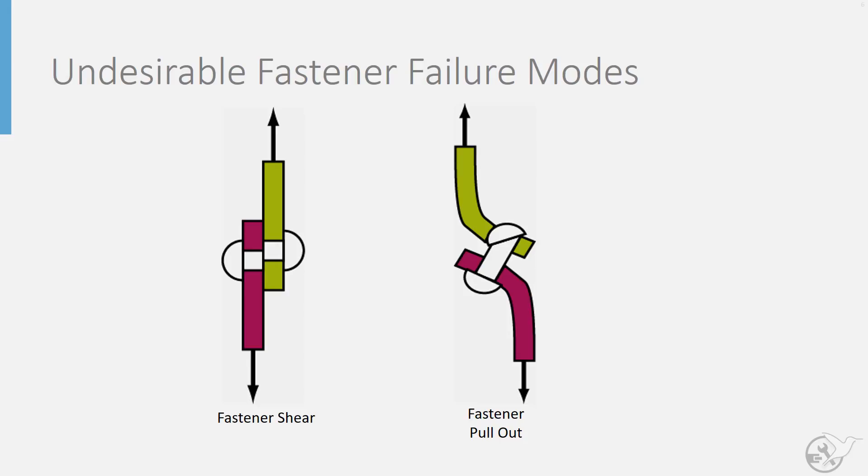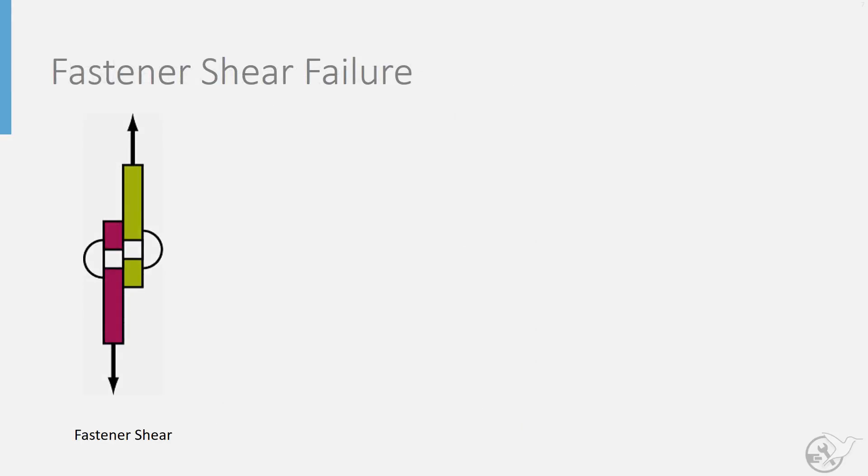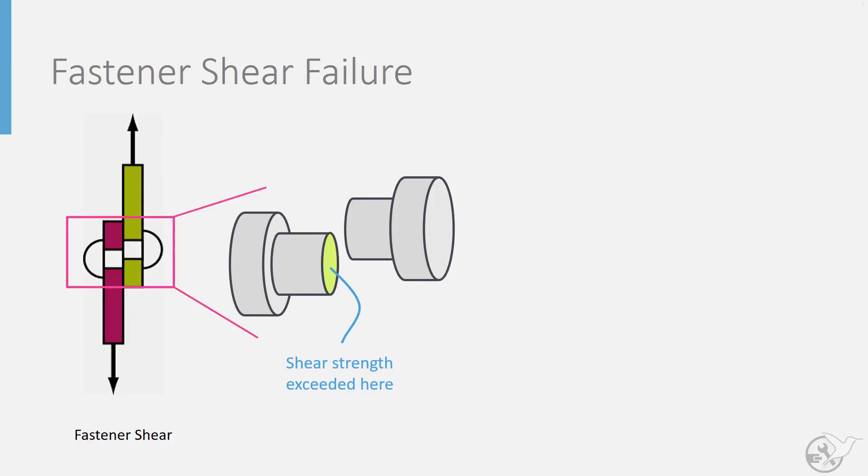First, we will look at the undesirable fastener failure modes. Fastener shear failure occurs when the shear stresses in the plane of the fastener exceed the shear strength of the fastener material.